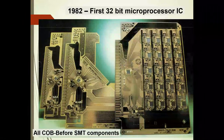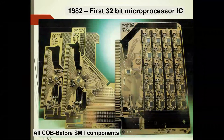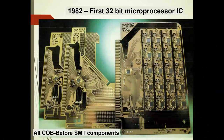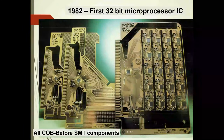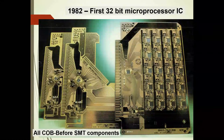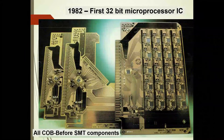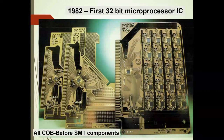On the right is a memory board, in the middle is the CPU, on the left are the I/O drivers and peripheral driver boards. At the time, a 32-bit computer like a VAX weighed 1,000 kilos and occupied a 19-inch rack. This computer weighed less than one kilo and was smaller than a child's metal lunch pail — enormously successful and powerful for its size and time.